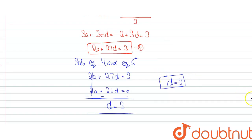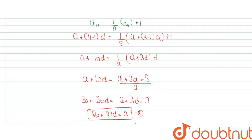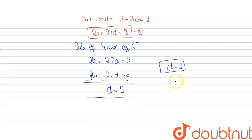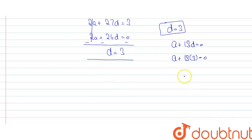Putting the value of d into equation three: a + 13d = 0. Substituting d = 3 gives a + 13 × 3 = 0, so a + 39 = 0, which gives a = -39. Therefore a = -39 and d = 3.